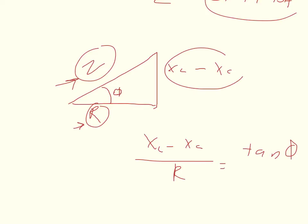Yeah, that's the same thing as saying that R over Z is equal to cosine of the angle. But I'll leave it up to you. You can do it either way. So let's just assume you did it the way that the book says.